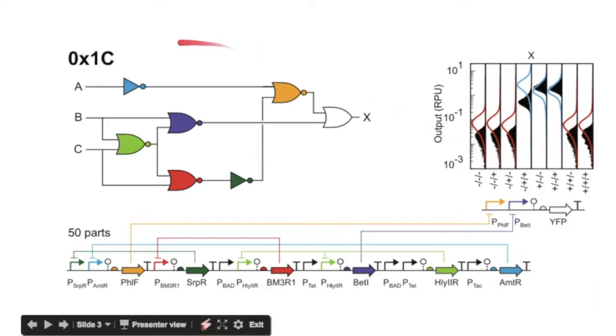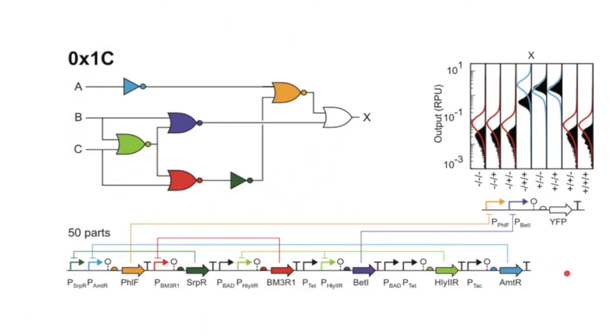For every different design produced by Cello, the researchers were able to get the DNA structure put in a cell and perform wet lab experiments. Then, they analyze the data that you can see here and basically compare that data to the information predicted by Cello.